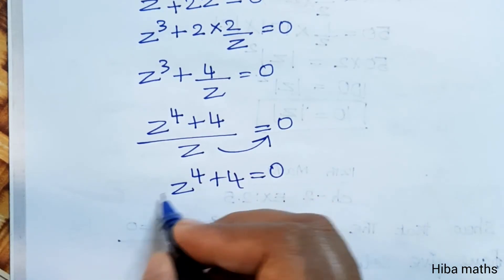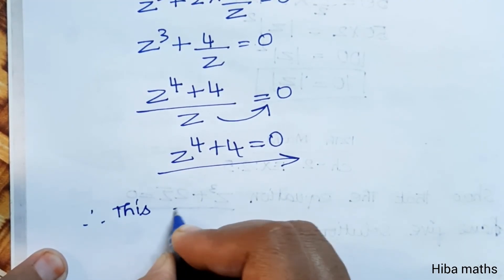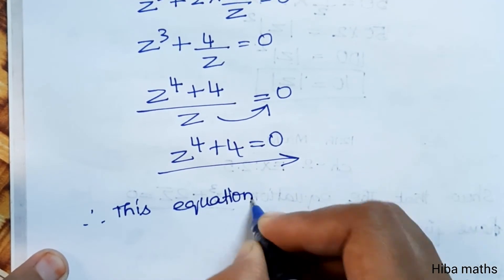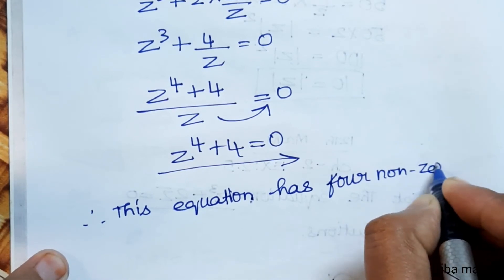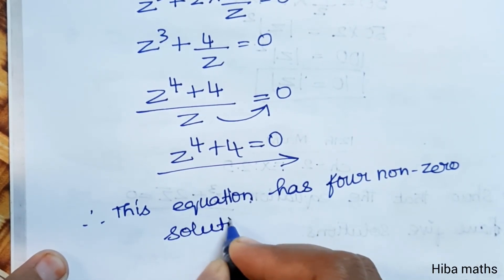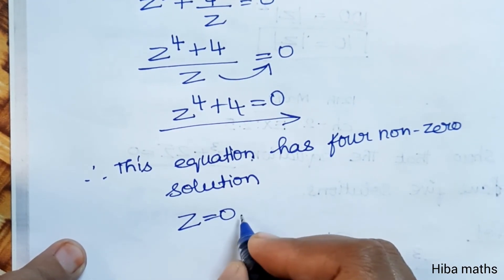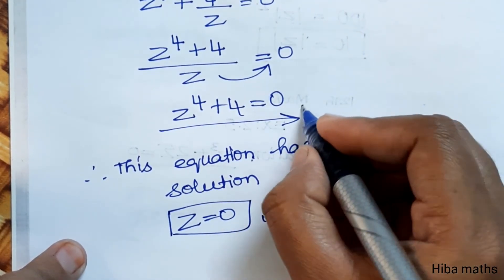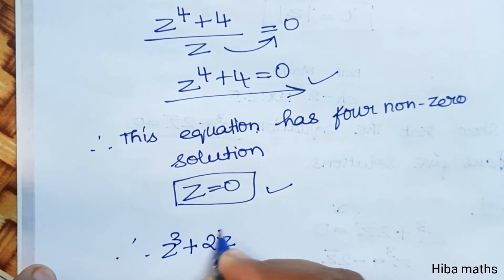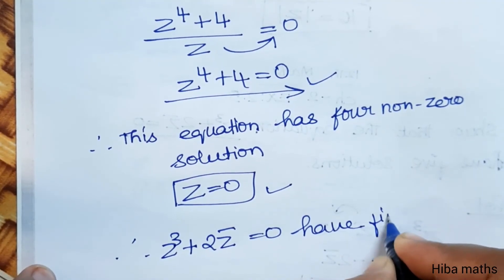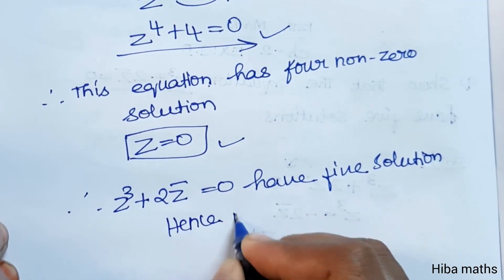Z⁴ + 4 = 0 is a degree 4 equation, so it has 4 solutions — these are 4 nonzero solutions. Combined with Z = 0 as the first solution, Z³ + 2Z̄ = 0 has a total of 5 solutions. Hence proved.